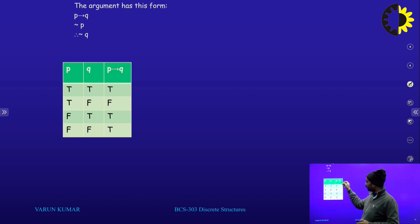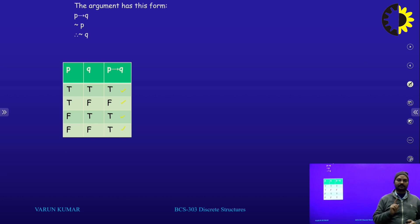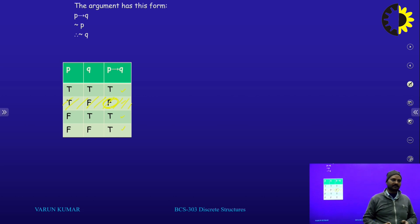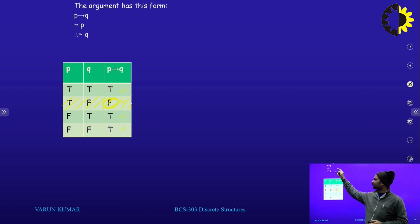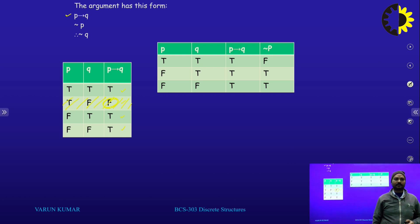We check validity with a truth table. P implies Q has values: true, true, true, and false. If my first statement must be valid — meaning P implication Q must be true — we do not include the row where the result is false. So we reduce our table to only three entries.